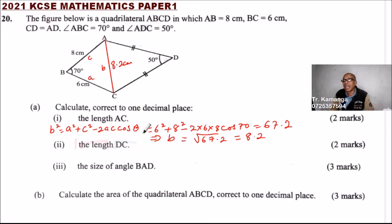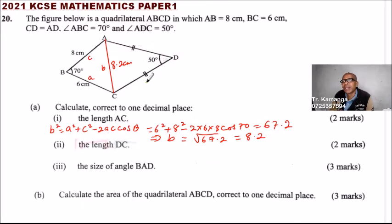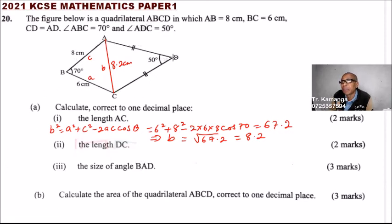Now we are supposed to get the length DC. Note that triangle ADC is an isosceles triangle. If you drop a perpendicular, it divides the angle ADC into two equal parts, so each becomes 25 degrees.